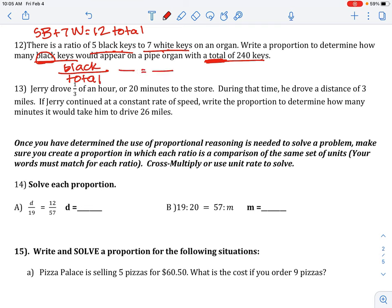Set up your proportion. Go to the original ratio. There were 5 black keys over 12 total keys. And in the second sentence, the number given to us is 240 total keys. That means that is a denominator number. So 240 goes on the bottom. Now cross multiply to solve.